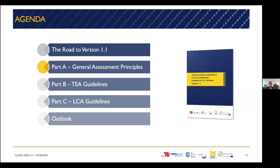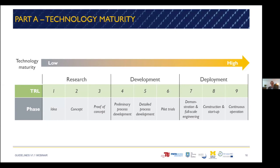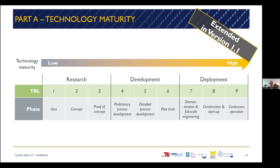Now I'd like to come to part A and highlight two key topics. The first is technology maturity. The guidelines cover recommendations for all phases, from low maturity research to high maturity development and deployment. We have included guidance on how to apply the so-called technology readiness levels, TRL, for these assessments, reaching from the very first stage of idea to the very last stage of continuous operation. In various sections of the guidelines, you can find recommendations for these specific maturity levels. We have also extended the guidelines and added a section on screening assessment in version 1.1, meaning how to conduct assessment at a low level of detail.